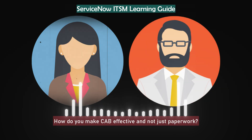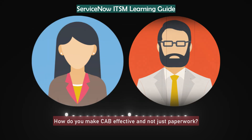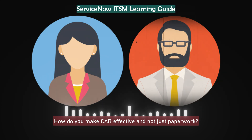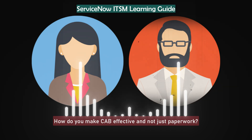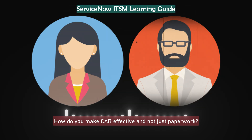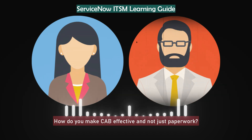How do you make CAB effective and not just paperwork? For me, CAB should be a discussion on risk, not a box-ticking meeting. I keep standard changes pre-approved and only bring the real risky or business-impact ones to the CAB. Everyone there must challenge the plan, rollback strategy, and communication steps. I document decisions transparently and track results after go-live. When the team sees the CAB adds value and not delay, they respect the process in their day-to-day work.